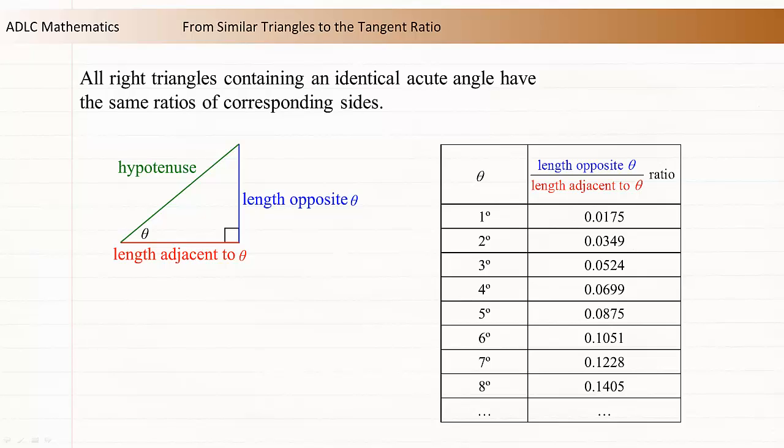If theta is one degree, then this ratio is approximately 0.0175. If theta is two degrees, the ratio is approximately 0.0349, and so on.